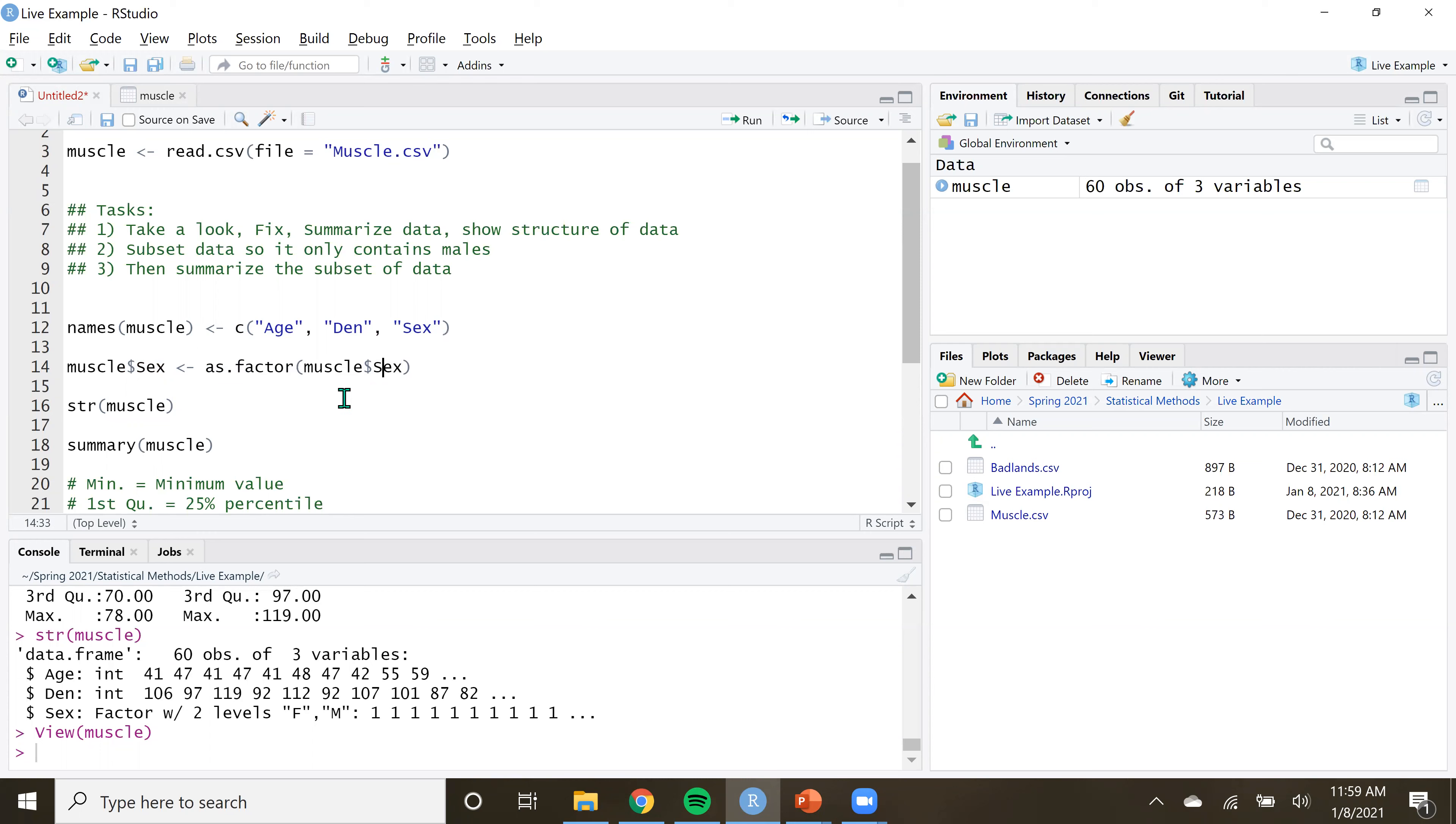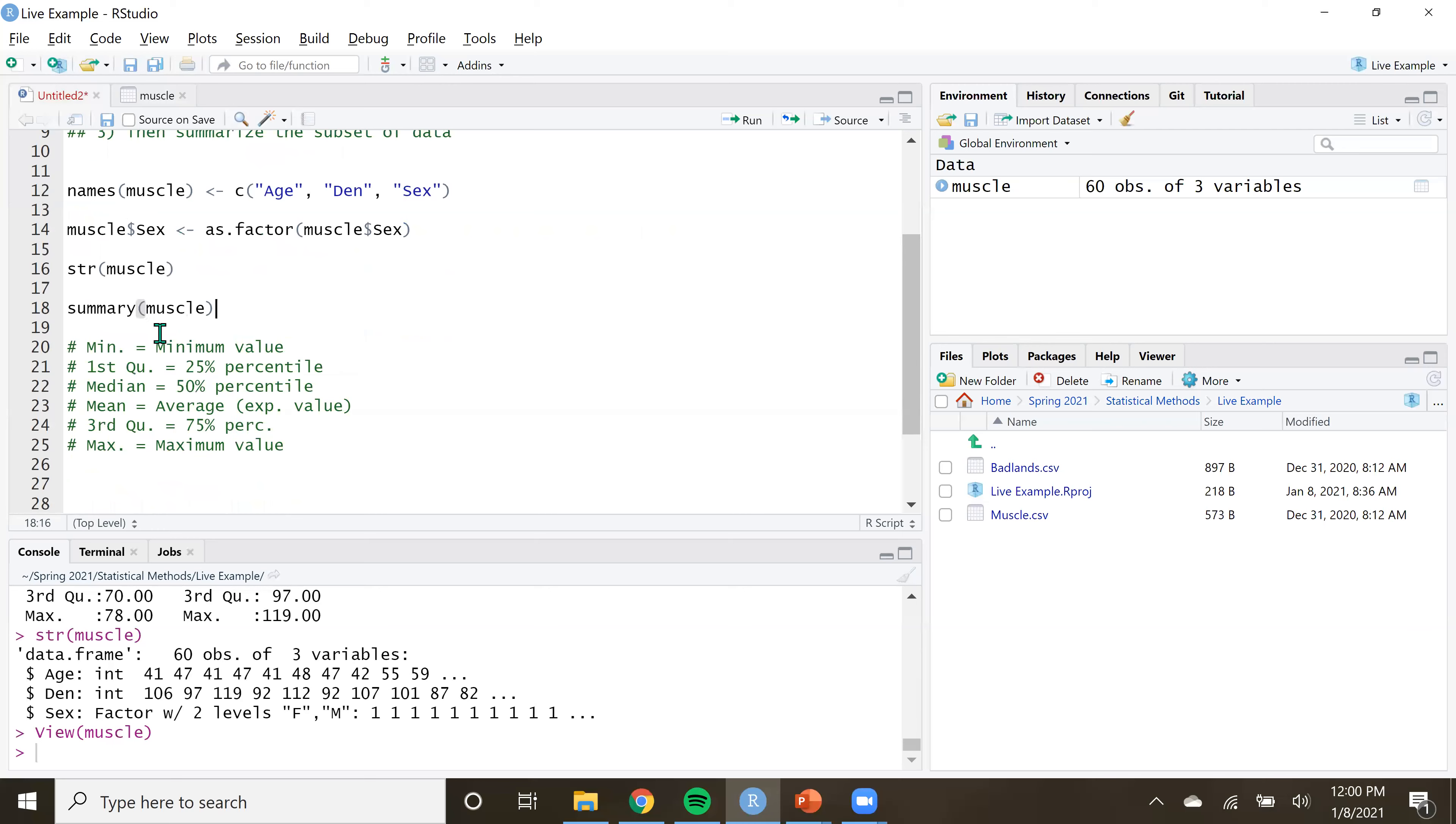We just put the same thing in there. We use the structure function STR to get the structure, which shows this here. And then the summary of the data set, summary function of the data set to give us the traditional five slash six number summary. Very cool.